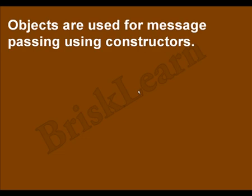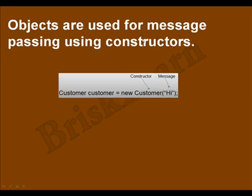Now let us see another example — how to pass a message using a constructor. In the previous example, 'new customer' doesn't have any parameters; that is called a default constructor. Here, a string is used as a parameter, so 'new' followed by the constructor passes a message called 'hi'. So you can pass messages in two ways: one is using methods, and the other is using a constructor.